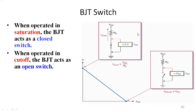As we know, a transistor can be used as an amplifier and also as a switch. Let us look at how it can be used as a switch. This is the load line of the transistor, and we are aware that at this point the transistor is in the cutoff region, and at this other point the transistor is in the saturation region.